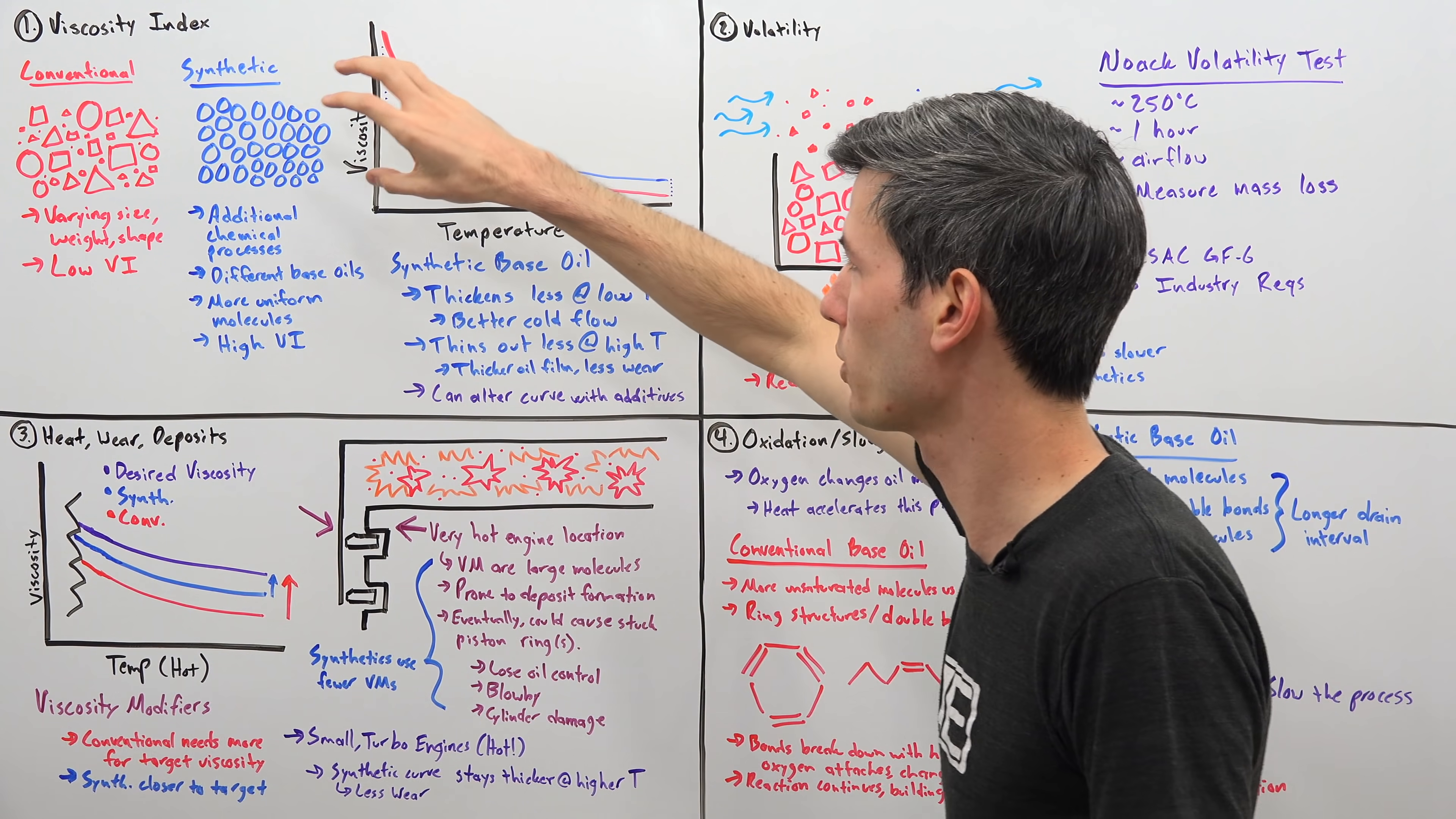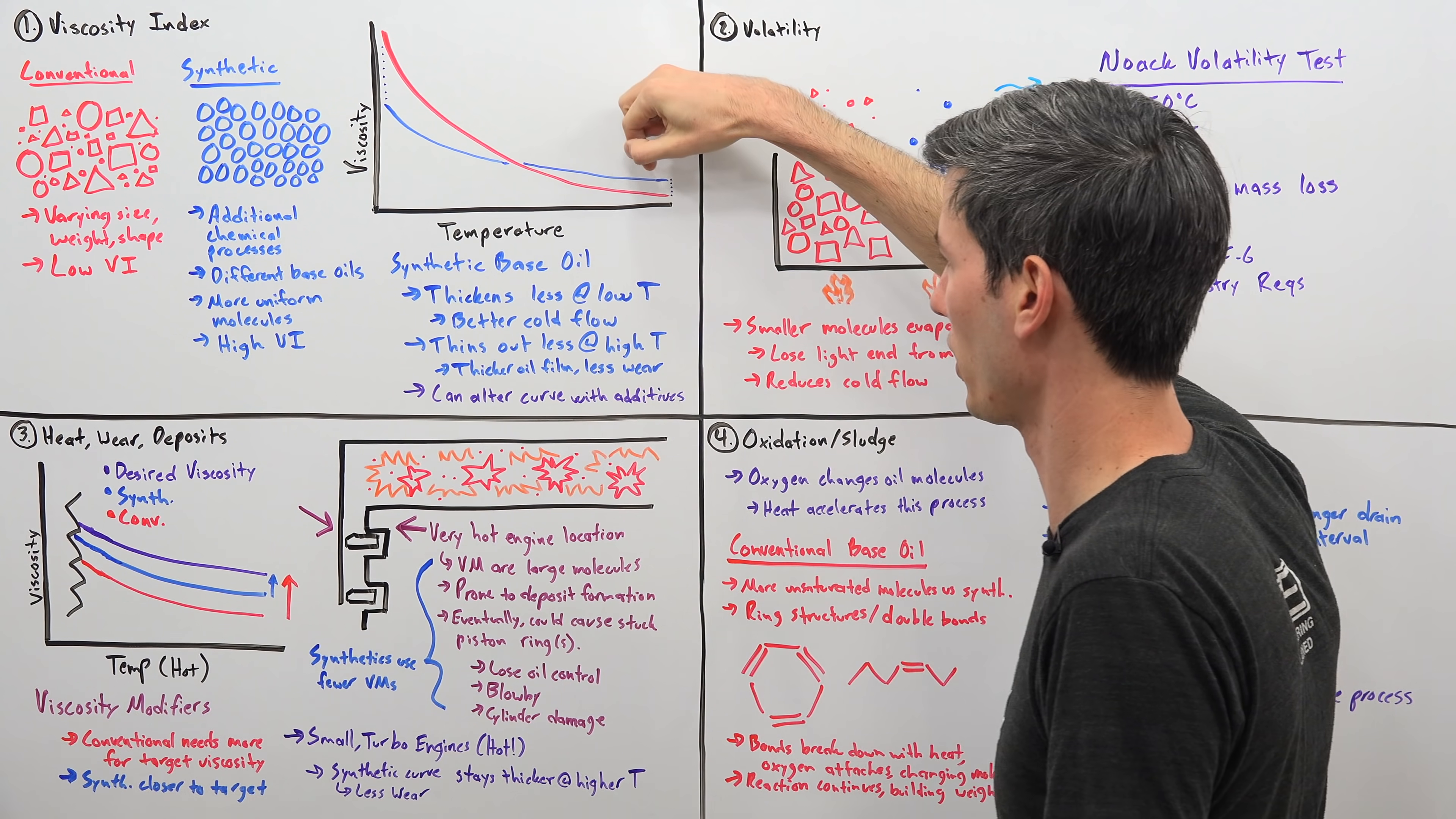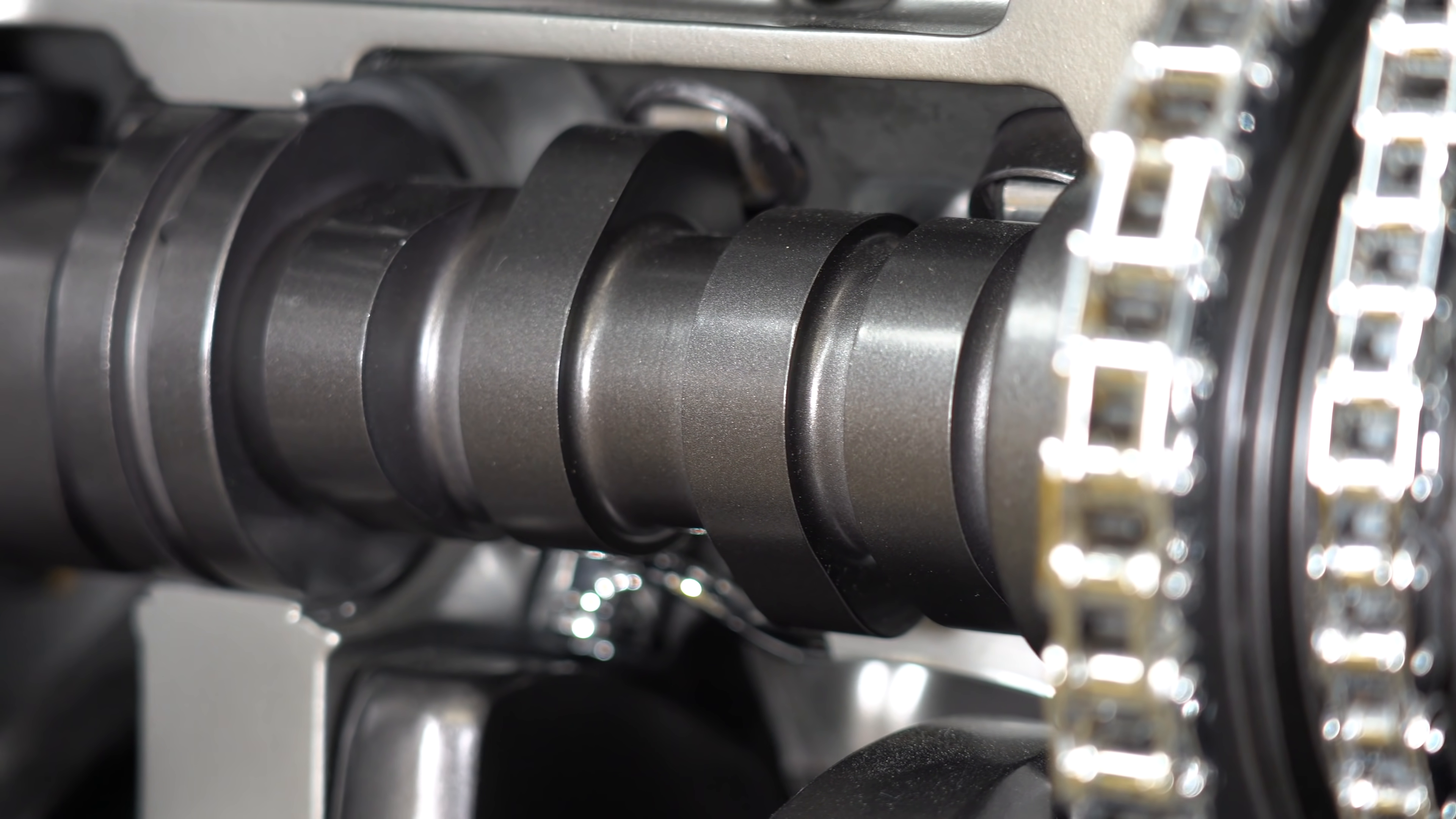Versus a synthetic oil which has that much more uniform structure, again simplified drawing here, but it's undergone additional chemical processes. They may use different chemicals, different base oils to make it up. With this more uniform structure you have a higher viscosity index meaning you have less change with temperature. At lower temperatures you have better flow because it doesn't thicken quite as much as a conventional oil. And then at higher temperatures you have a thicker oil because it doesn't thin out as much like a conventional base oil. So with a thicker oil at higher temperatures you can have better wear protection.